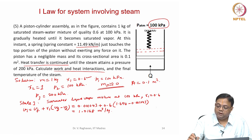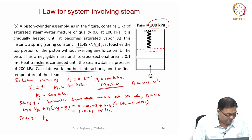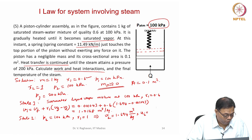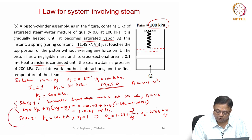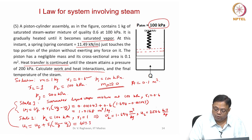State 2 is when the piston just touches the spring — a constant pressure process. P2 is 100 kilopascals, but the mixture has now become saturated vapour, so x2 equals 1. That implies V2 equals 1.694 meter cube per kg and U2 equals 2506 kilojoule per kg. We can also calculate U1.